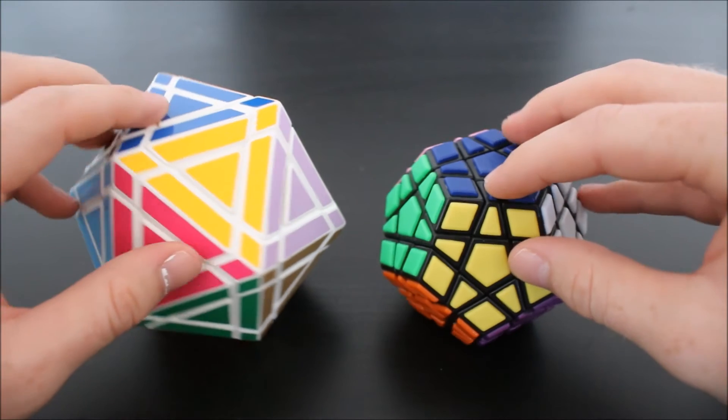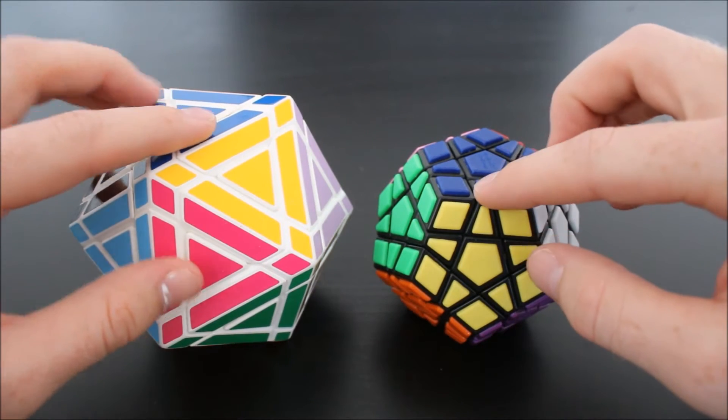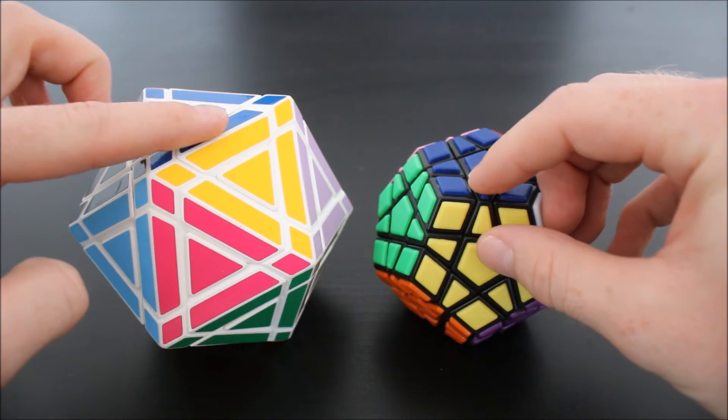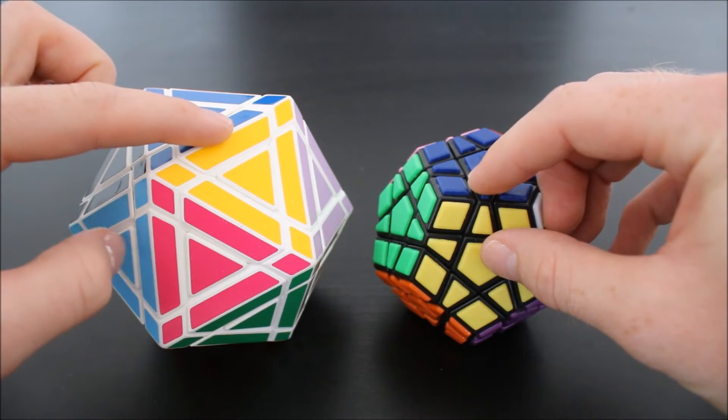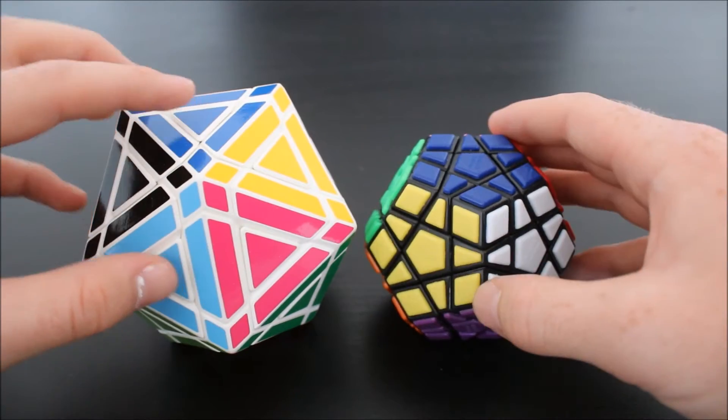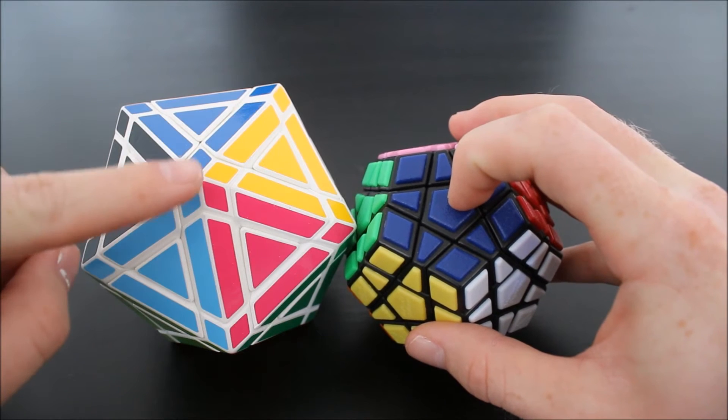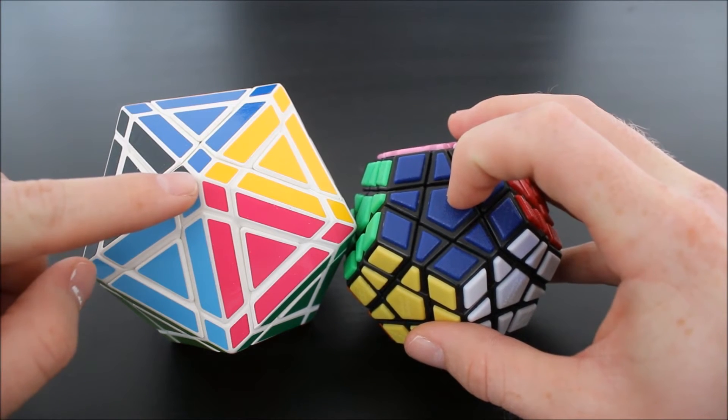Then shaving down the edge pieces on the Megaminx, and then extending back up into this edge piece on the Icosahedron, and finally extending the center pieces into these star-shaped center pieces.